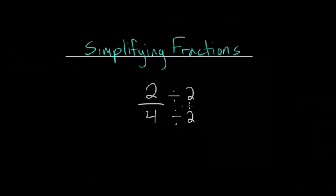We can do this because, in effect, we're dividing by 2 over 2, which is just 1. Anything divided by itself is just 1, and you can always multiply or divide a number, like 4,